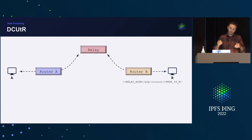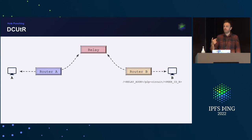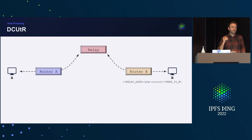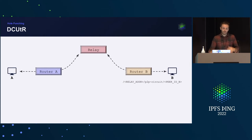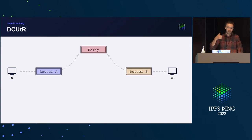Peer A connects to the relay and asks it to forward traffic to peer B. At this point both peers are connected through the relay. As soon as peer B notices that peer A has connected through the relay, peer B looks at the multiaddresses of peer A and tries a connection reversal — a direct connection attempt — before starting the full hole punch. Only if this fails does peer B start the DCUTR protocol.